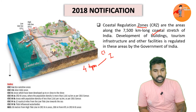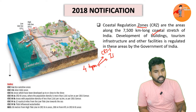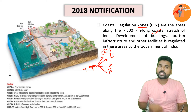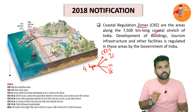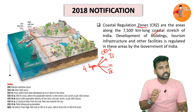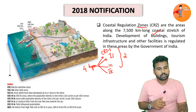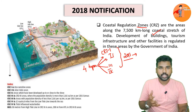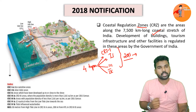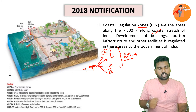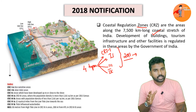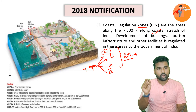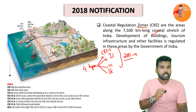The four types are: CRZ1, CRZ2, CRZ3, and CRZ4. There is a specific criteria for each of these zones. The first major notification came in 2011, and then in 2018 some modifications were made. Let us first look at the 2011 classification, and then the modifications.